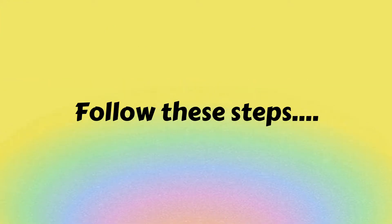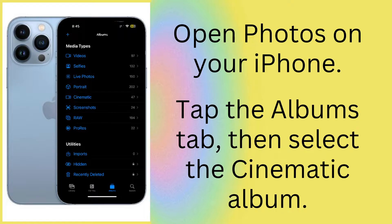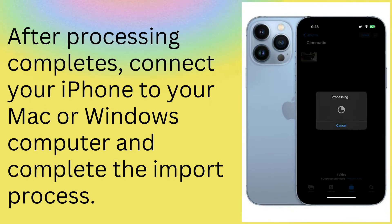If your iPhone is connected to your Mac or Windows computer, disconnect it. Then open Photos on your iPhone, tap the Albums tab, and select the Cinematic album. Tap 'Process Now.' After processing completes, reconnect your iPhone to your Mac or Windows computer and complete the import process.